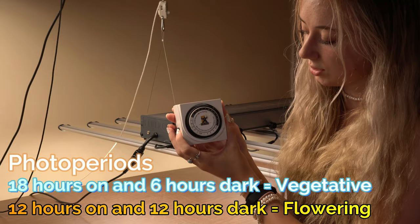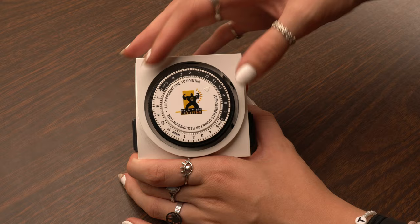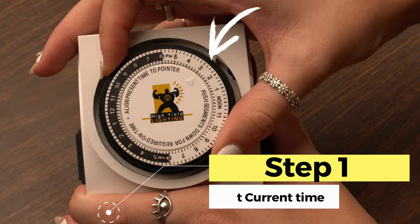So the first step of setting up a timer is to align it to the time that it is right now. So I'm going to set it to 4:20 PM, so right about there.